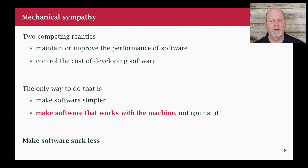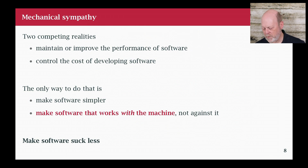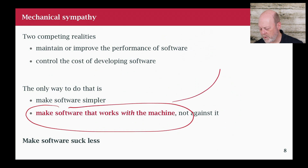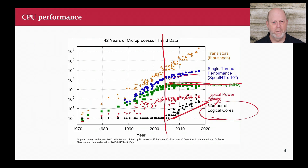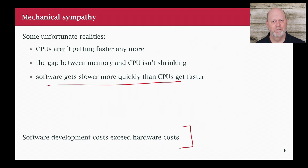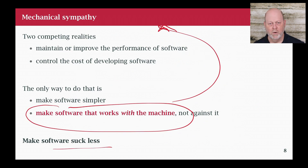Mechanical sympathy is about getting into this reality of making software perform reasonably well. We can make it simpler — that always helps. But more importantly, mechanical sympathy is about making the software work with the machine and not against it. We had a couple of choices: we could make the software concurrent because we have more cores — that is also a type of mechanical sympathy — or we can make the software suck less. That's where we're going in this presentation.